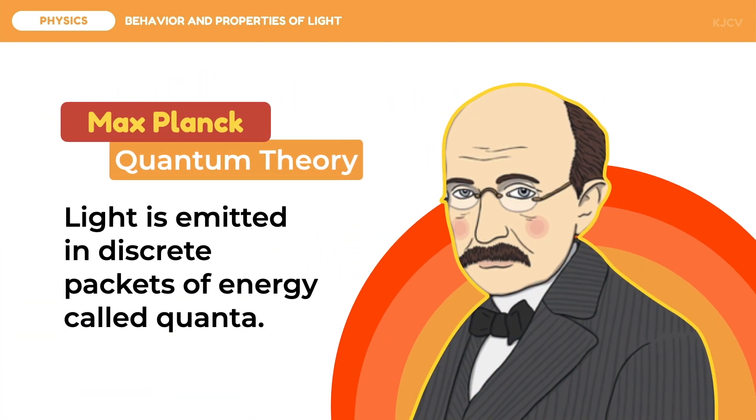According to this theory by the German physicist Max Planck, light is emitted in discrete packets of energy called quanta. This means that light is made of particles or photons which have wave-like properties associated with them.